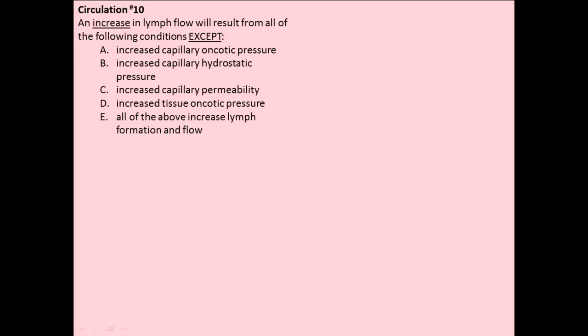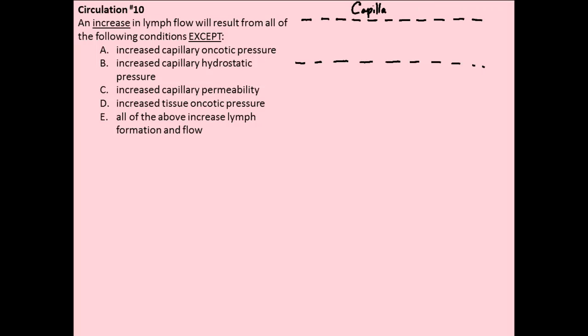For today we're going to be looking at number 10 in the circulation problem set. This is asking us to examine the four different pressures involved in bulk flow processes and determine which one would not cause an increase in lymphatic flow — in other words, we're looking for a factor that would decrease lymph flow. To do this, we're going to draw a general representation of a capillary, with endothelial cells shown as dashed lines, and the interstitial fluid below.